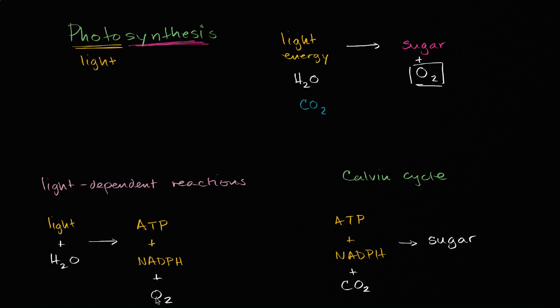And as a byproduct, we produce molecular oxygen, which is very important for us to breathe. And then that ATP and that NADPH can be used in the Calvin cycle along with carbon dioxide to actually synthesize sugar.